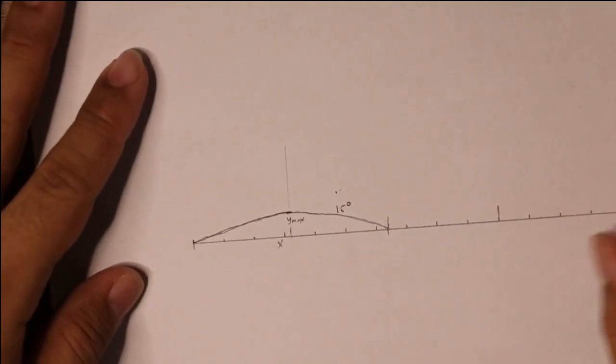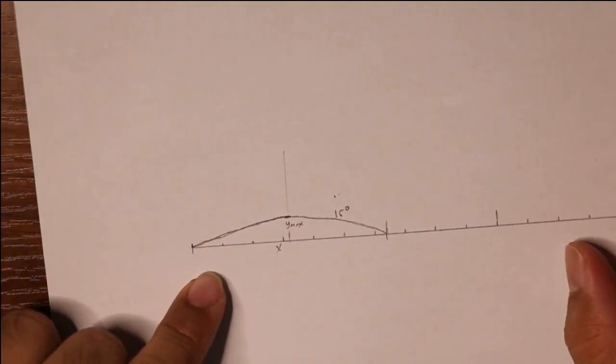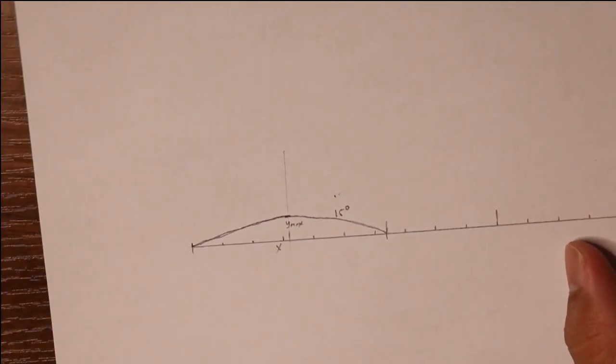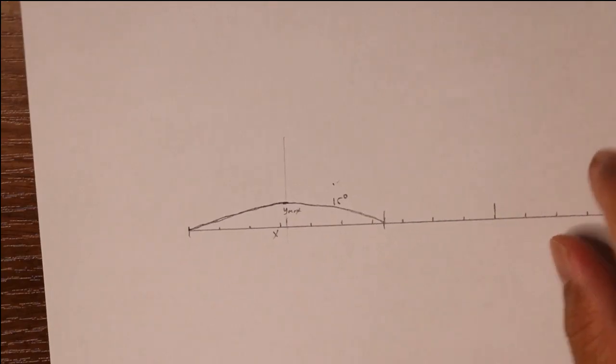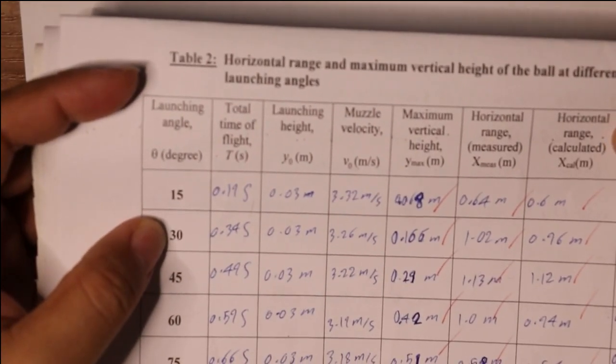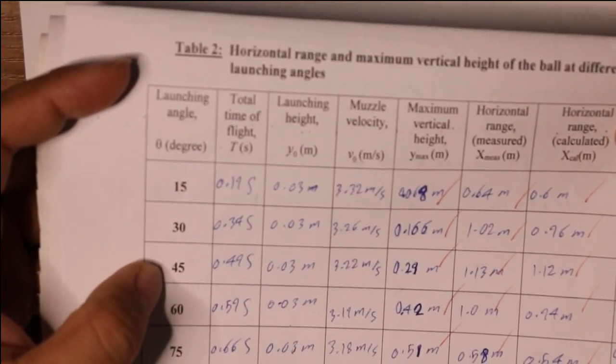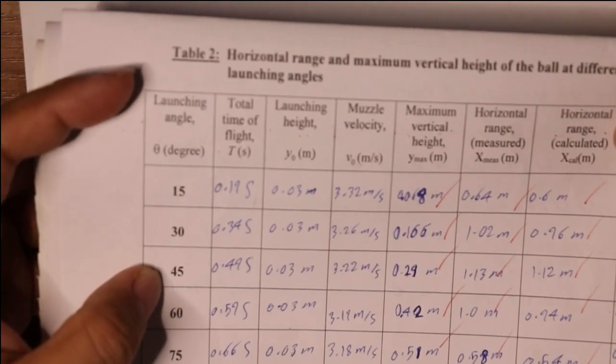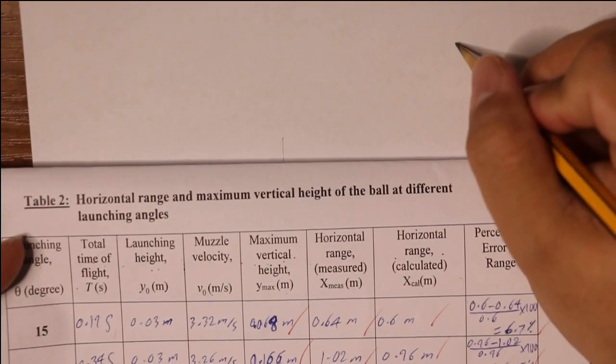Finally you can label this as your 15 degree trajectory. This is your X and this is your Y maximum. That's how you will draw the 15 degrees. What about the next angle? Let us take another example. The next angle is 30 degrees but let us take 45 degrees.